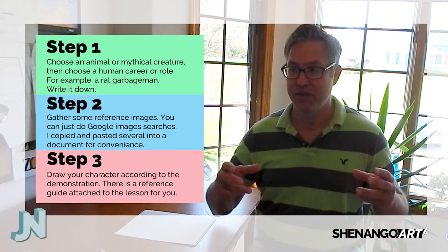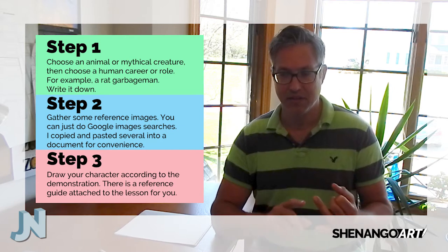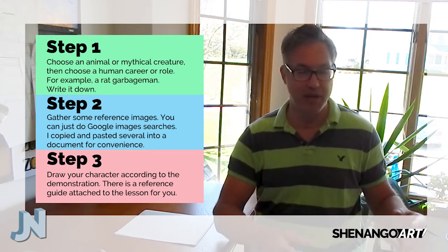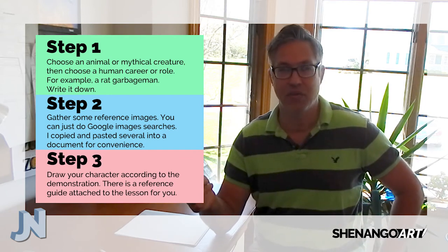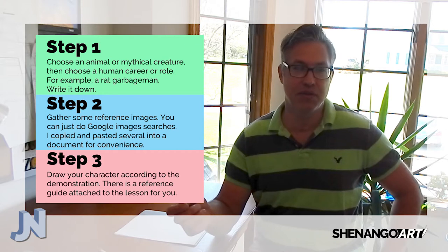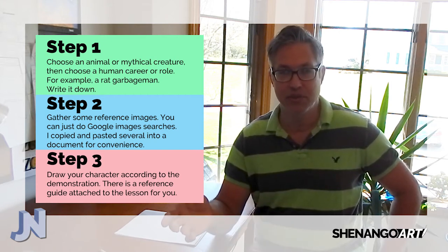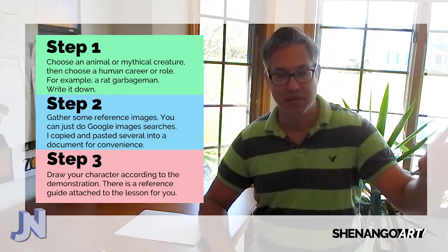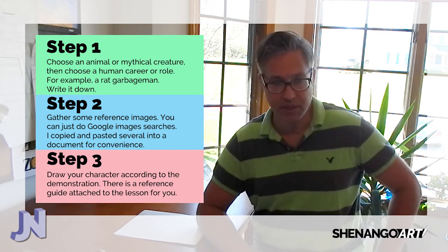I'm going to be doing a rabbit astronaut. Once you've made your choice, gather some references. You have two things to synthesize: the career and the animal. Get a bunch of pictures of rabbits to look at — I'm not copying them exactly, but references help. All artists use references; they shoot photography or do a Google image search. I printed them into a document just to have at my desk.